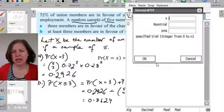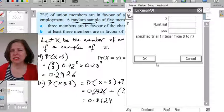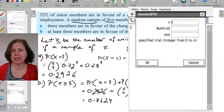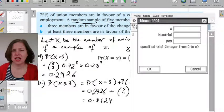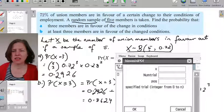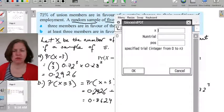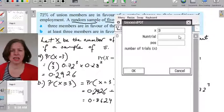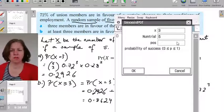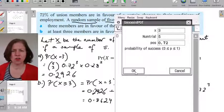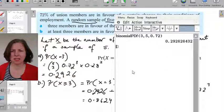So the PDF, all I need to enter is, okay, what's my question? Well my question is asking me for X equals 3, and I know that I've got n is 5 and p is 0.72. So I simply enter in X equals 3, and then n is 5, and p is 0.72, and I hit okay.